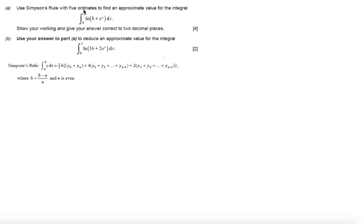Five ordinates means that we have four strips. Five ordinates is always one less strip than ordinates, so four strips means n equals four. Calculating h, b is three, a is zero, over four, so we get h is 0.75.